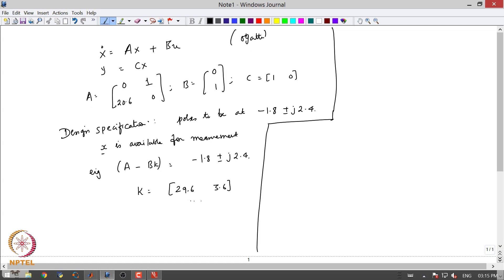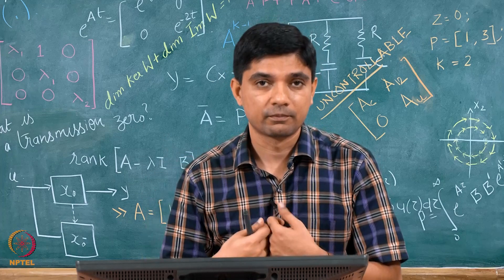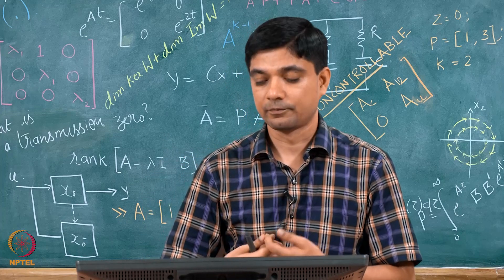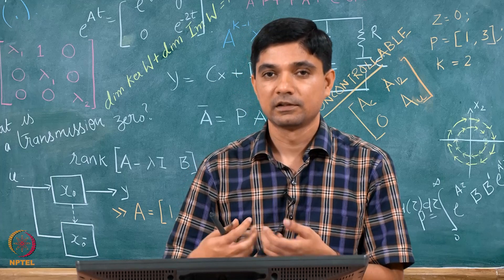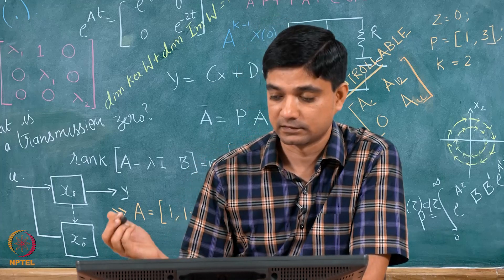What happens here is that x is not directly available for measurement. So an additional step we need to do is that of an observer design. In most problems we will only be given the desired plant performance — this could be in terms of a certain overshoot, a settling time, and so on. From a basic control course, this will translate to some kind of locations of the poles of the closed loop system, or what we call dominant pole analysis.